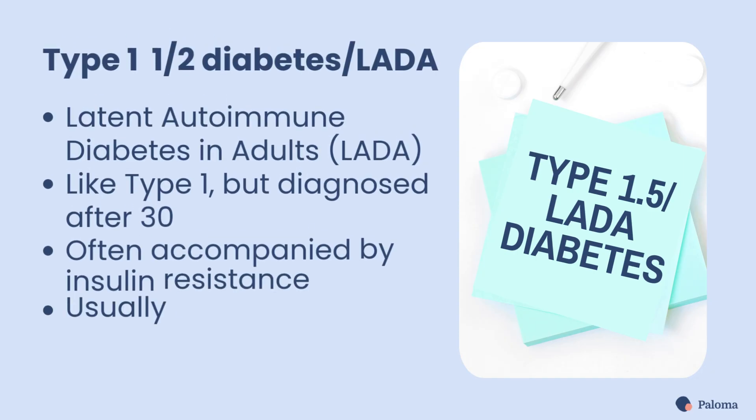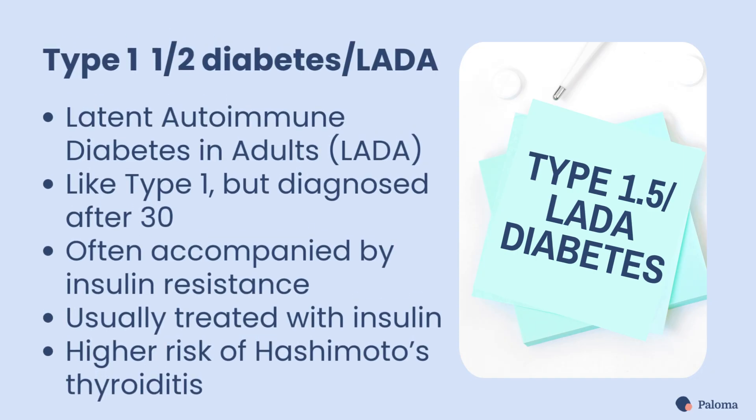Type 1 and a half diabetes, also called latent autoimmune diabetes in adults or LADA, is autoimmune like type 1 diabetes, but is diagnosed after age 30 and is also frequently accompanied by insulin resistance. Type 1 and a half LADA almost always requires insulin treatment. People with type 1 and a half LADA diabetes are at higher risk of Hashimoto's thyroiditis.